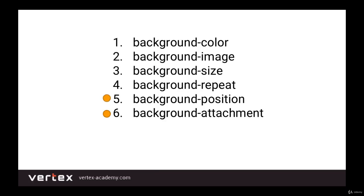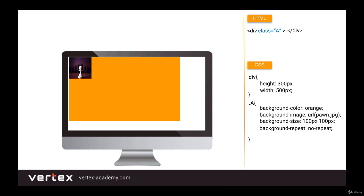In the previous lesson we learned the following properties: background-color, image, size, and repeat. In this one we're going to learn two more: background-position and background-attachment. As you can see in HTML, we created a div with class A, and in CSS we set the height to 300 pixels, width to 500 pixels, background-color to orange, and background-image to the chess piece you see in the block. We set the size to 100 by 100 pixels with background-size and background-repeat. You should already be fairly familiar with all this.